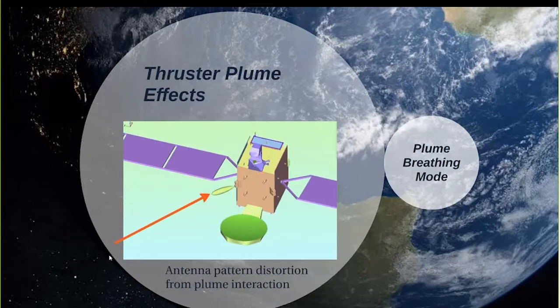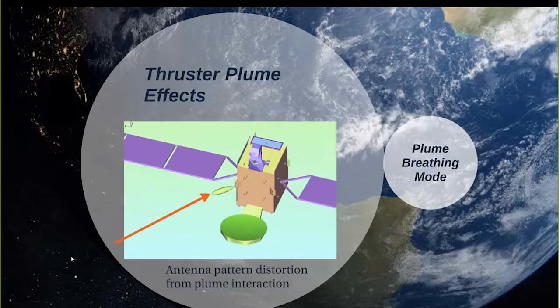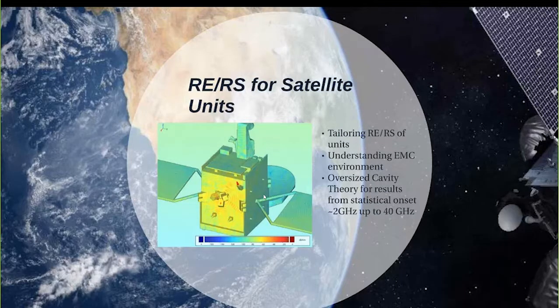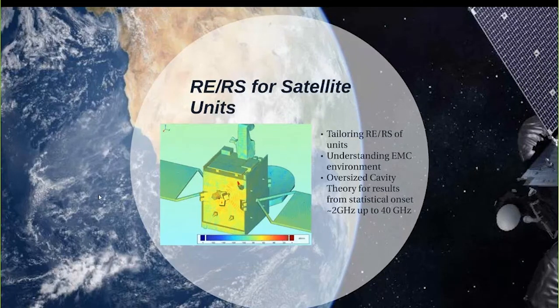Also coming, we'll talk about ways that we can model the effects of thruster plumes and how that cloud of ions can change antenna patterns and affect the link and the dynamic link as the spacecraft is moving. We'll also talk about the interference that can come from the plumes breathing mode. Also coming, we'll talk about RERS for satellite units using power balance method or oversized cavity theory. These are statistical methods that help us analyze the coupling to cavities without using full wave methods and help us reach very high frequencies.